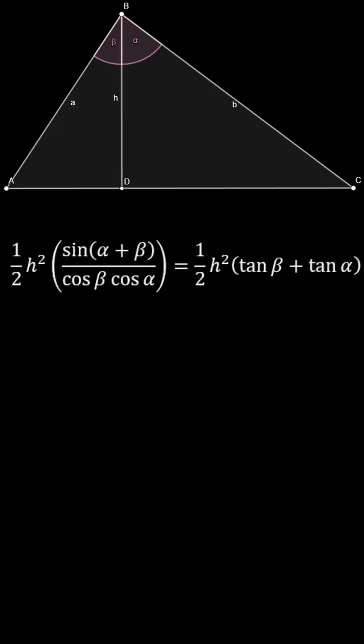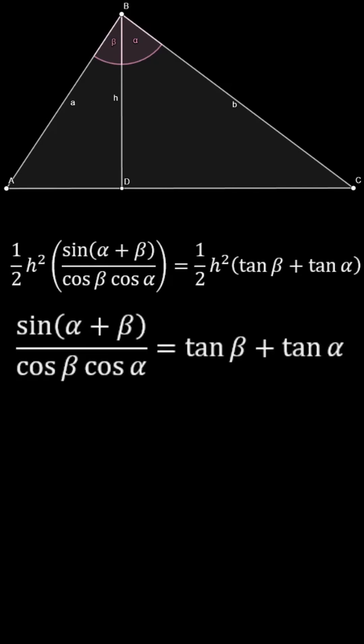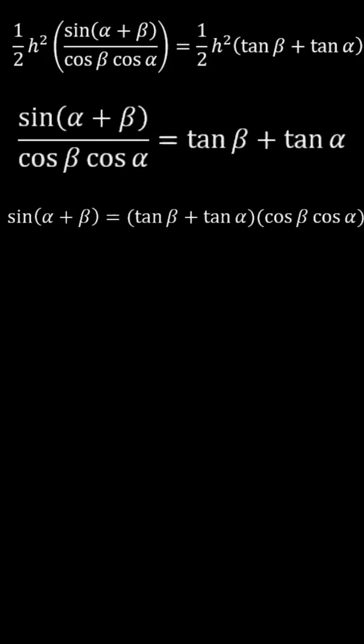Then, as shown on screen, we can cancel both the H squared and the half on each side, and we are finally left with a unitary expression for the sine of alpha plus beta.